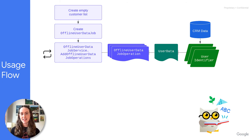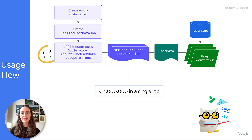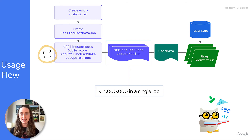We recommend adding up to 10,000 identifiers in a single call for optimal processing. Repeat the add offline user data job operations API request until all operations are added or the job is at capacity. We recommend no more than 1 million operations in a given job.